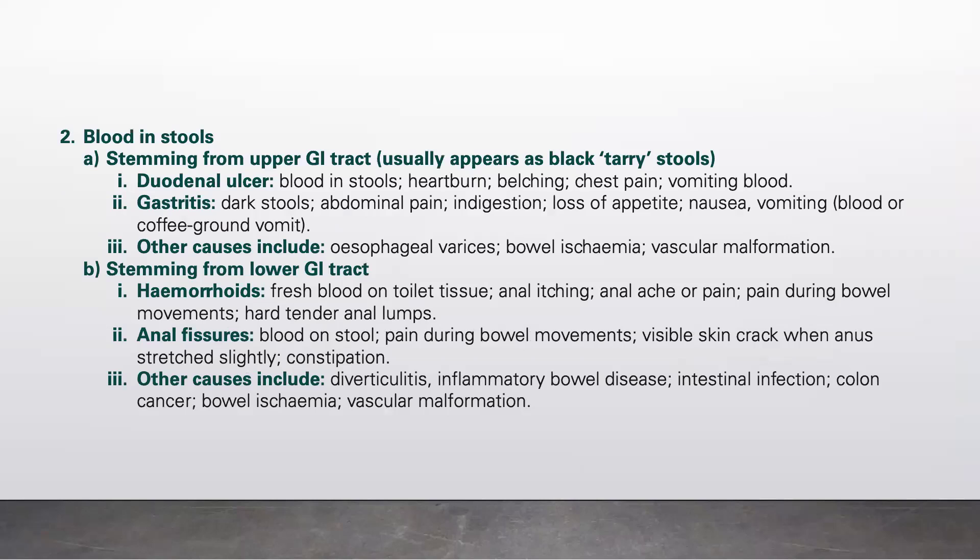Next we look at blood in the stools, which could stem from the upper gastrointestinal tract or from the lower GI tract. If it stems from the upper GI tract, it could be due to a duodenal ulcer, where there is blood in stools, heartburn, belching, chest pain, and vomiting blood.